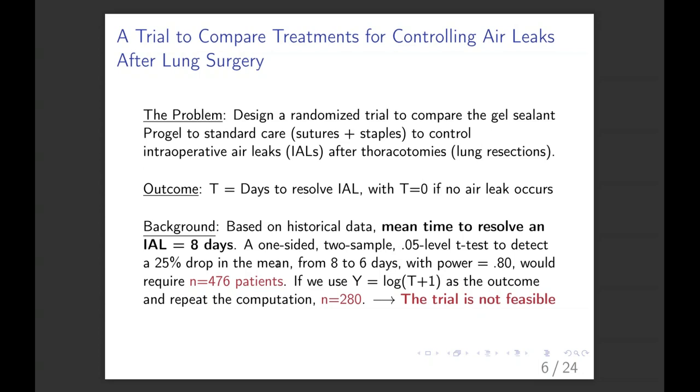So the outcome is simply the number of days to resolve the intraoperative air leak. The background is the mean time to resolve intraoperative air leaks is about eight days. So if you do a one-sided two-sample 0.05 level T test, you want the mean to drop 25% from eight to six days with a power of 80, you need 476 patients. That's a lot. If you use the log of T plus one and repeat the computation, the sample size is 280. The trial is not feasible. So you can't do it. A multi-institution trial, yes, but not at one institution.